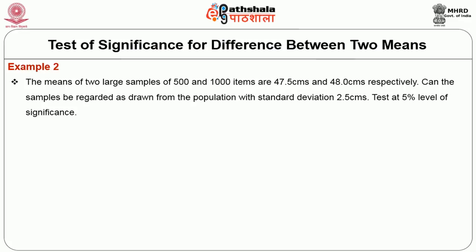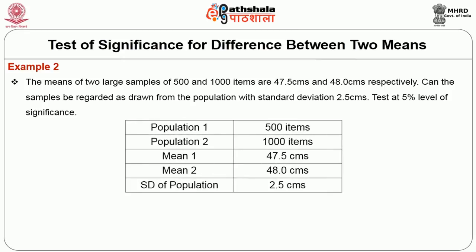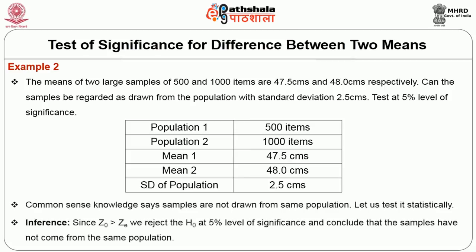Example 2: The means of two large samples of 500 and 1000 items are 47.5 cm and 48 cm respectively. Can the samples be regarded as drawn from a population with standard deviation of 2.5 cm? Test at 5% level of significance. Population 1 has 500 items, population 2 has 1000 items, mean 1 is 47.5 cm, mean 2 is 48 cm, and SD of the population is 2.5 cm. On calculation, the observed value is greater than the expected value, so we reject the null hypothesis and conclude the samples have not come from the same population.